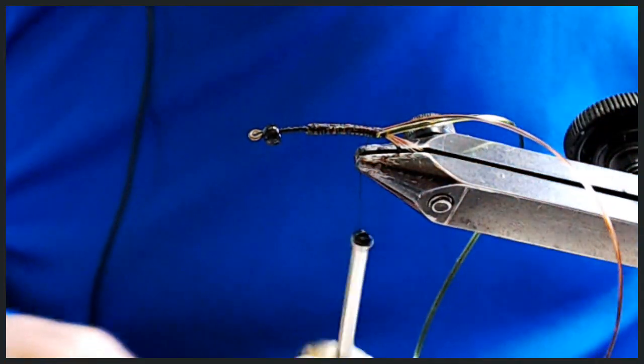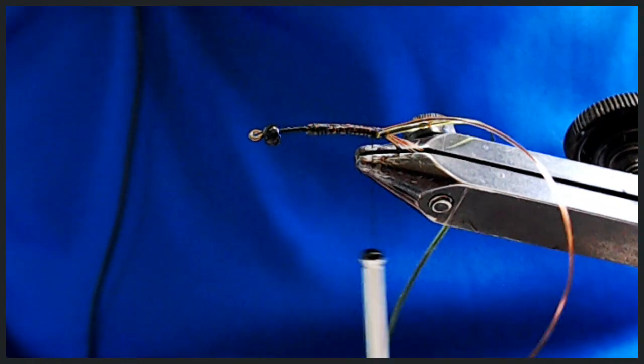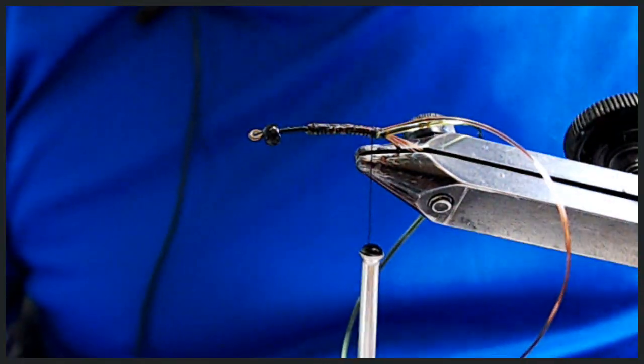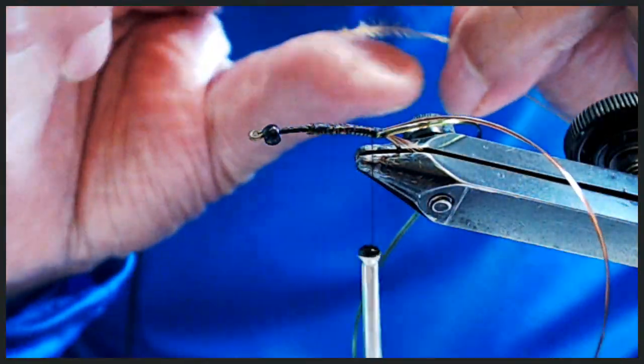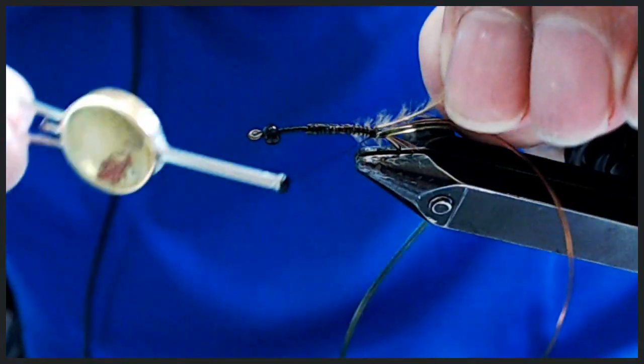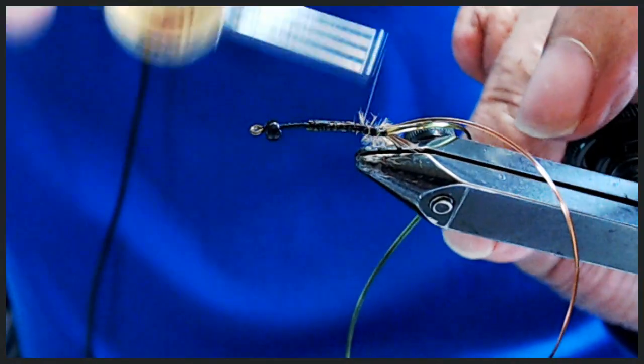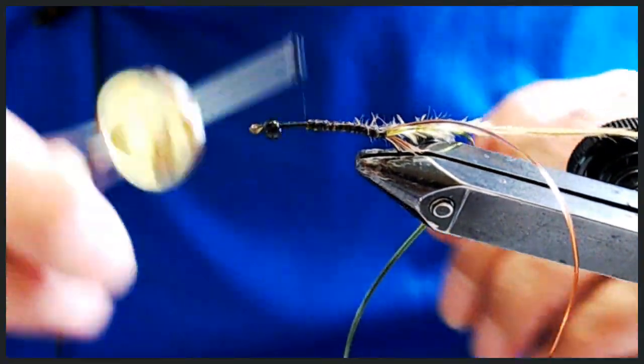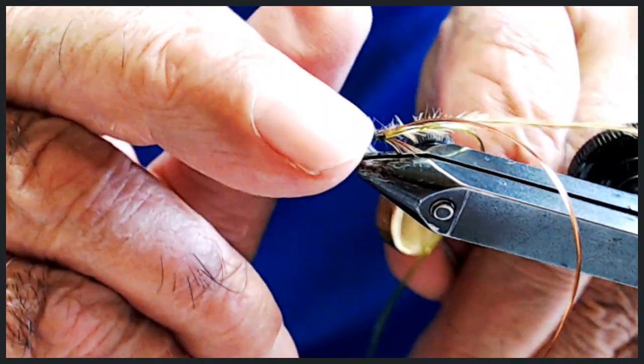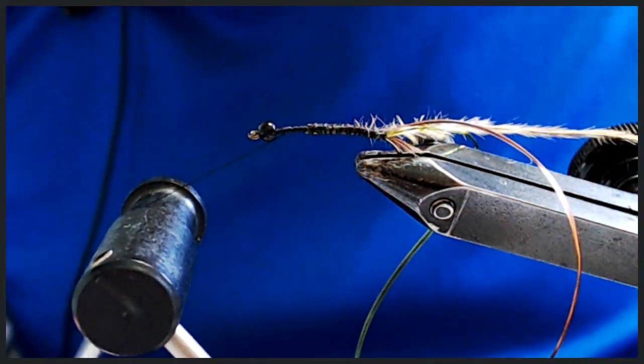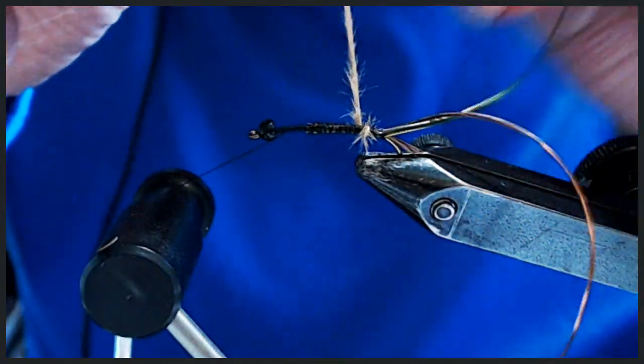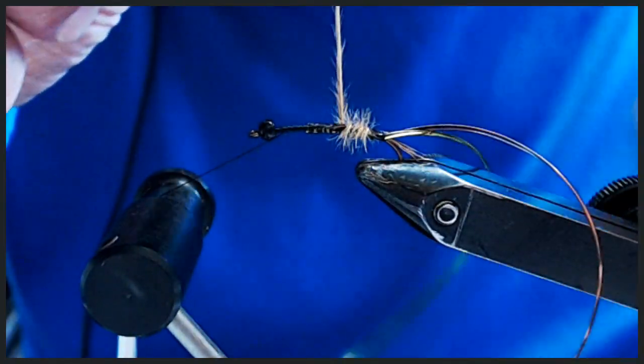Now I'm going to be putting one strand of ostrich. It's a dyed ostrich and it's a light brown. I'm going to be putting one on the edge down. Run my thread up. Give myself a half hitch because I'm using a rotary vise. I'm just going to put on the ostrich.